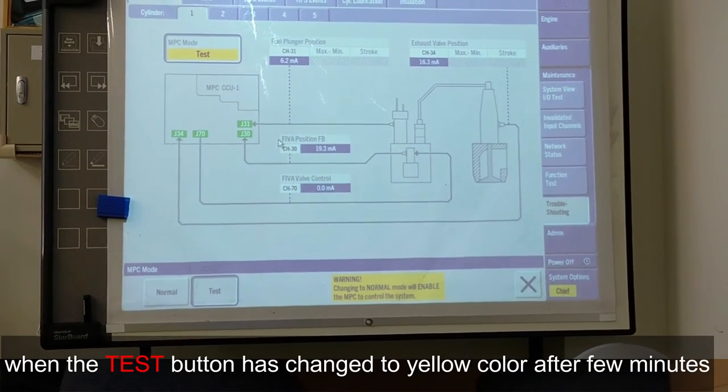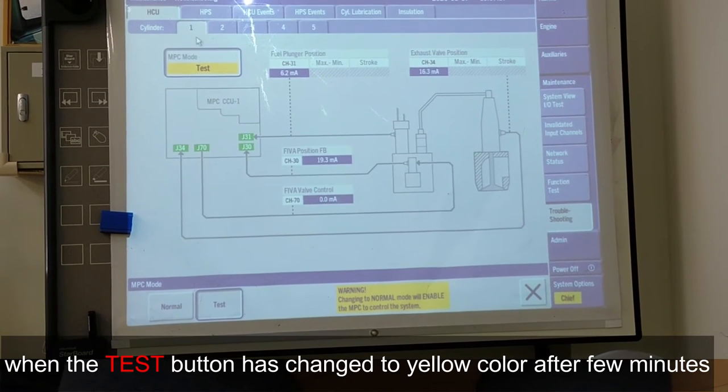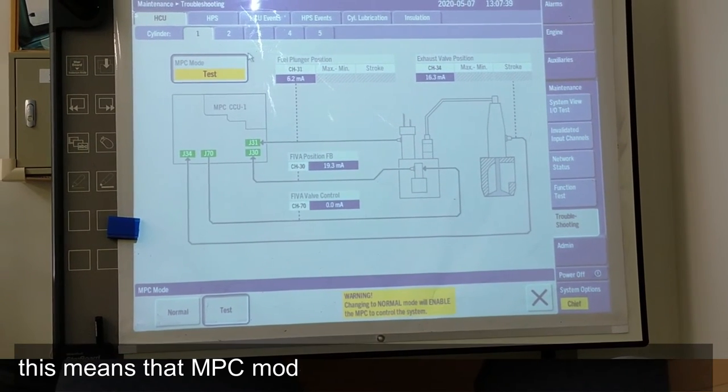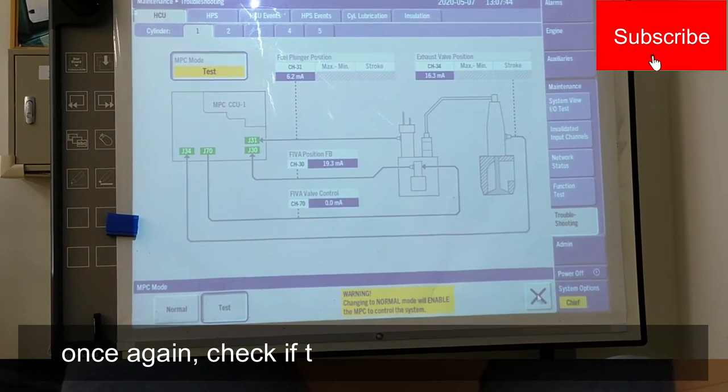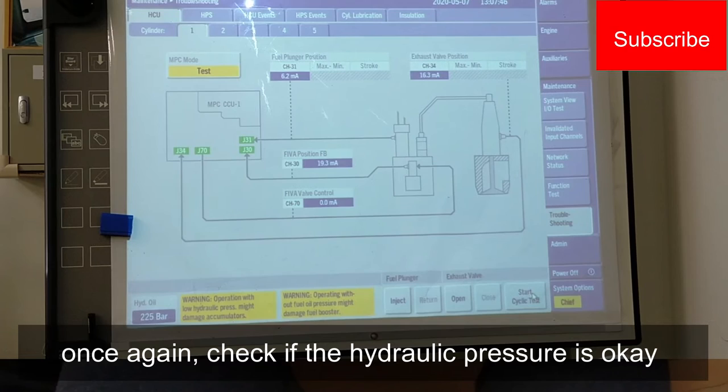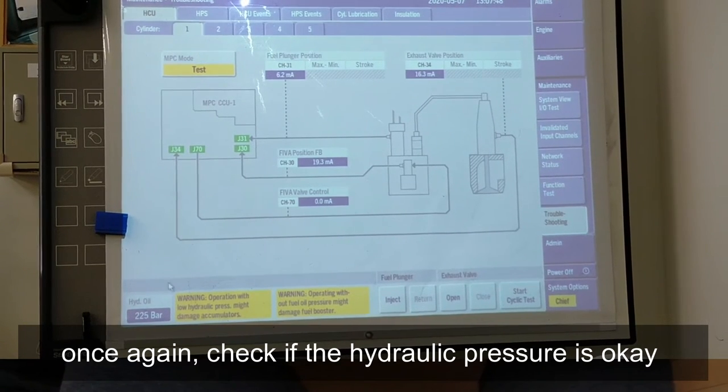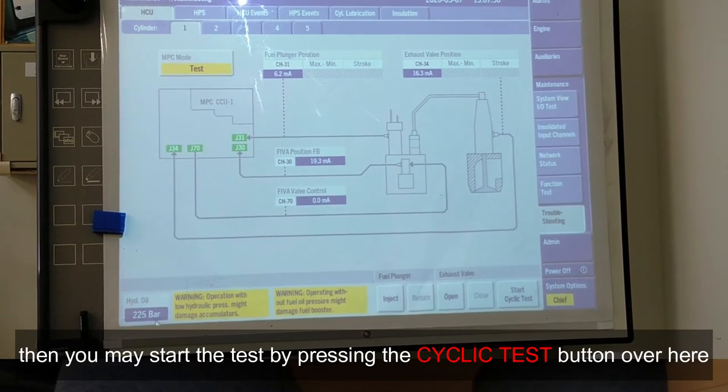When the test button has changed to yellow color after a few minutes, then this means that MPC mode has changed from normal to test. Once again, check if the hydraulic pressure is okay, then you may start the test.